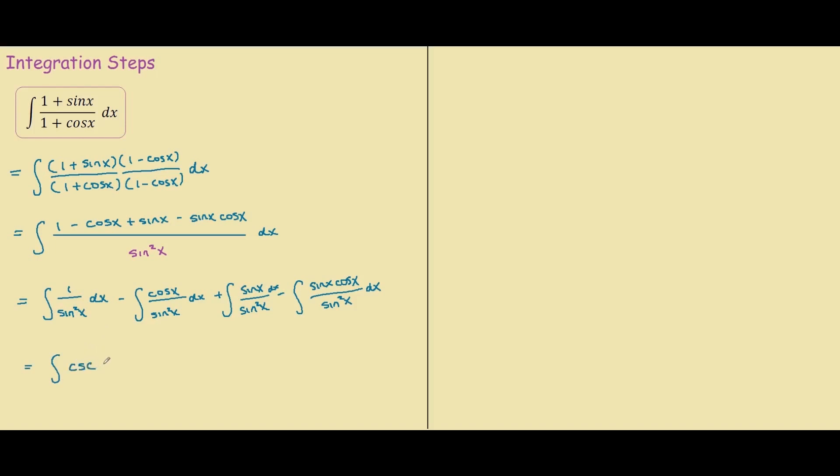Minus the integral of cosine x over sine squared x plus sine x over sine squared x is basically the same thing as 1 over sine x, so that would be cosecant.